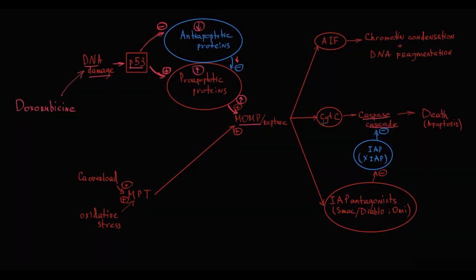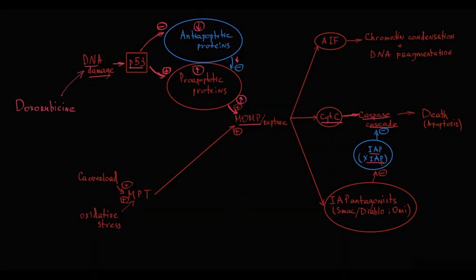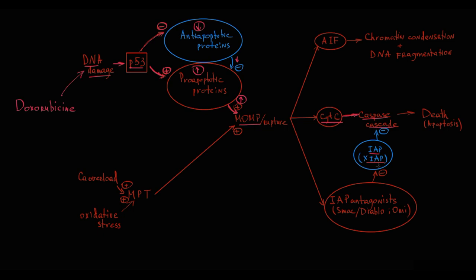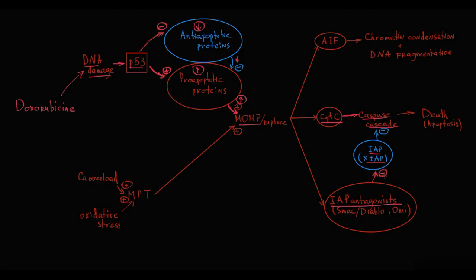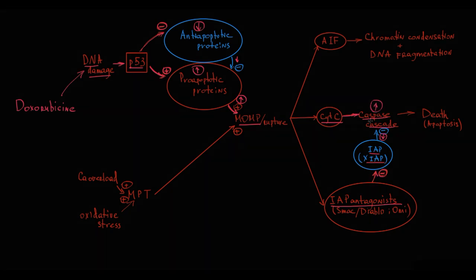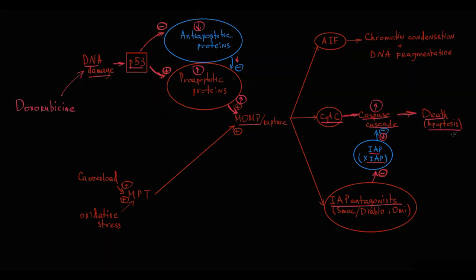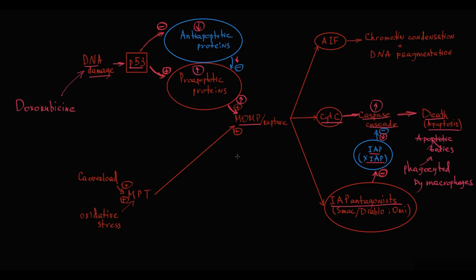The major player is cytochrome C, which directly activates the caspase cascade. Caspase activity is controlled by IAPs that inhibit caspase activity, but the second substance released from mitochondria — IAP antagonists — inhibit IAP activity and thereby stimulate caspases. The proteolytic activity of caspases results in total destruction of the cell with formation of apoptotic bodies, which are then phagocytosed by macrophages. So apoptosis is essentially a clean form of cell death.